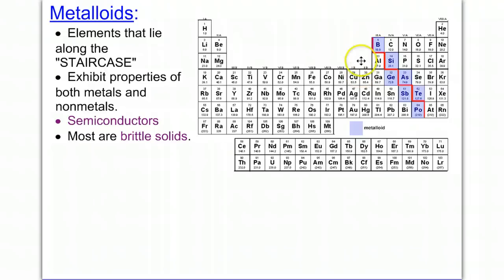Metalloids are going to be located on the staircase. Notice everything that's in a bluish color is a metalloid. Boron, silicon, germanium, arsenic, antimony, tellurium, and polonium are metalloids. Even though aluminum is touching the staircase, it's an exception, and it's going to be considered to have properties like a metal.